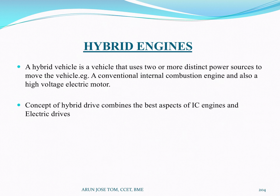A hybrid vehicle is a vehicle that uses two or more distinct power sources to move the vehicle. For example, a conventional internal combustion engine and also a high voltage electric motor. We have one IC engine that uses one electric motor to supply power to the automobile.